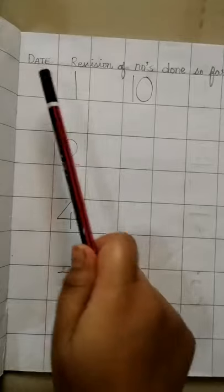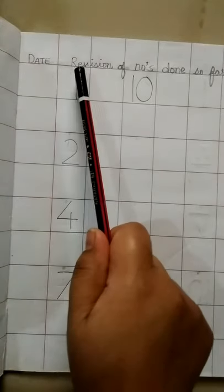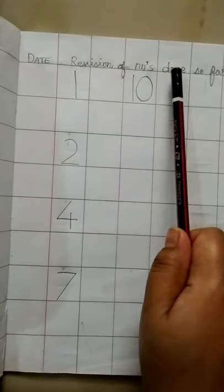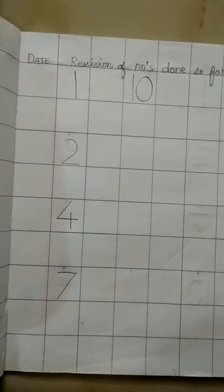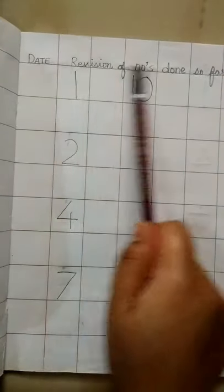Understood? So here our date comes. Then revision of numbers done so far is our topic. So parents are requested to write the date and the topic.